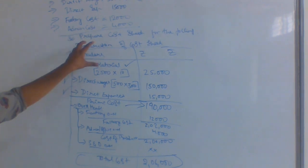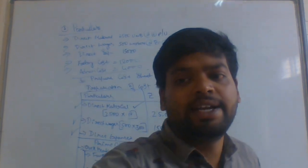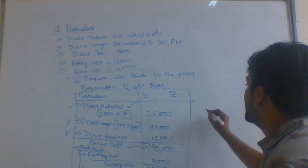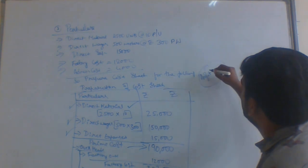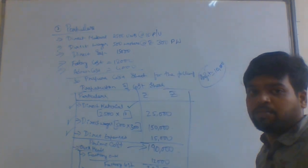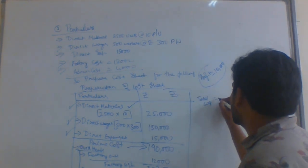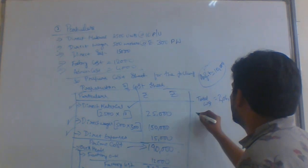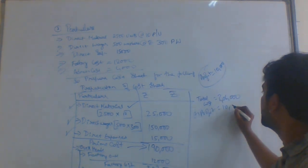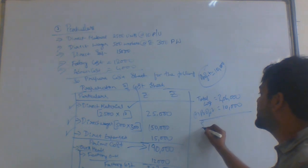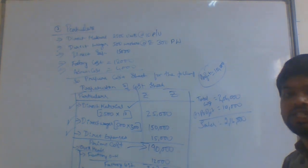Here there is no profit given, so that's why we cannot find the profits or sales. Suppose for this problem, if they had given a profit of 10,000 — what we need to do is take total cost as 2,06,000 and add profit of 10,000. If we add 10,000 profit, we will get sales. So our final sales will be 2,16,000.